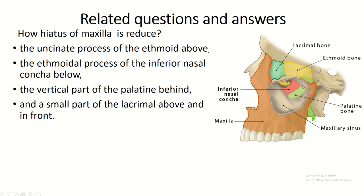The opening of the maxillary sinus is actually a very large one, but it is reduced by some bony structures: the uncinate process of the ethmoid, the inferior nasal concha, the palatine bone, and part of the lacrimal bone all help to reduce the maxillary hiatus.